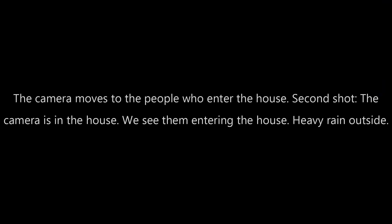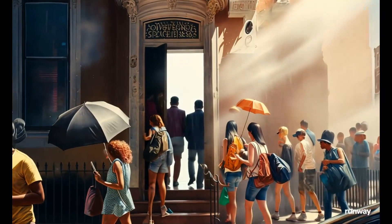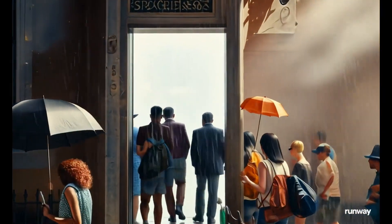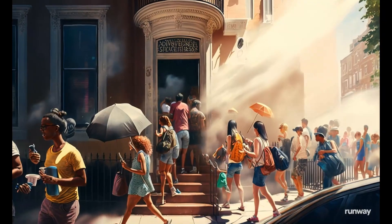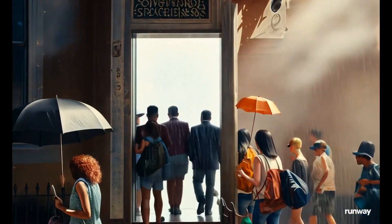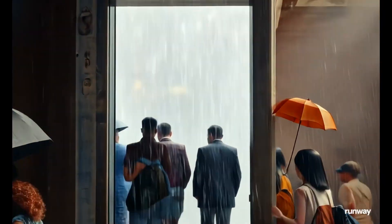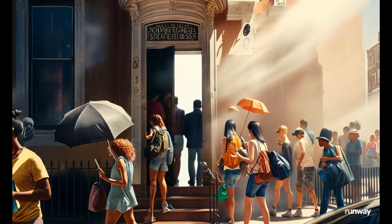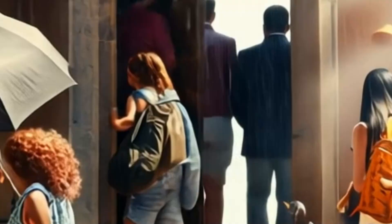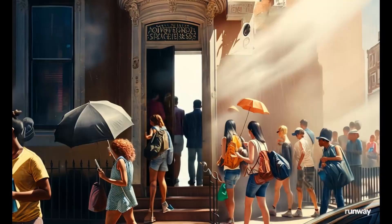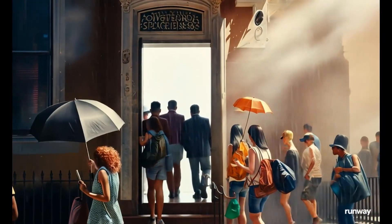The prompt: the camera moves to the people who enter the house; second shot, the camera is in the house, we see them entering the house, heavy rain outside. The camera motion is excellent — I did not expect the bright light in the house. There is a glitch in the center of the scene: I see a woman with a backpack who, while entering the house, disappears, and the backpack is now someone else's backpack.